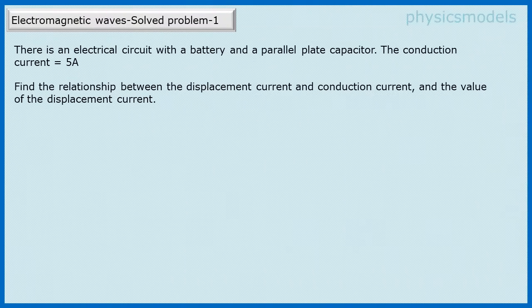It's given in the problem that there is an electrical circuit with a battery and a parallel plate capacitor. The current is given as 5 amperes. We have to find the relationship between the displacement current and the conduction current.